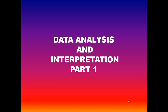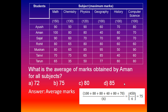Hello, welcome to my channel. Today I am going to describe data analysis and interpretations. In this table there are six subjects and seven students. Math has 155 full marks, 150 marks, Chemistry 130 marks, Physics 120 marks, Geography 100 marks, History 100 marks, and Computers 100 marks.